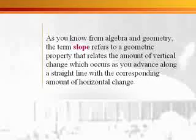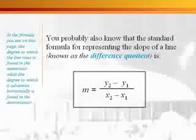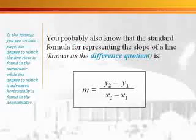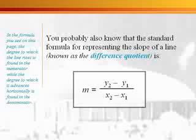As you know from algebra and geometry, the term slope refers to a geometric property that relates the amount of vertical change which occurs as you advance along a straight line with the corresponding amount of horizontal change. You probably also know that the standard formula for representing the slope of a line, known as the difference quotient, is m equals y sub 2 minus y sub 1 over x sub 2 minus x sub 1.